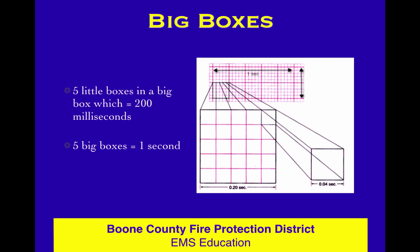If one big box equals 0.2 seconds or 200 milliseconds, then five big boxes is 1,000 milliseconds, which is one second. You might wonder why we care — well, we're going to use six-second strips to count the rate, because six seconds times 10 gives you a minute's worth. Count the number of complexes in a six-second strip, multiply by 10, and you've got the rate. So: little box = 40 milliseconds, big box = 200 milliseconds, five big boxes = one second.